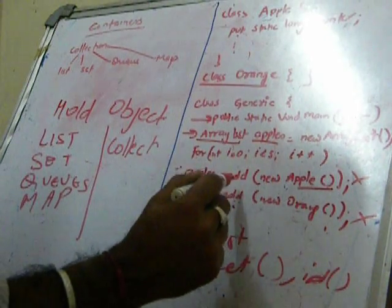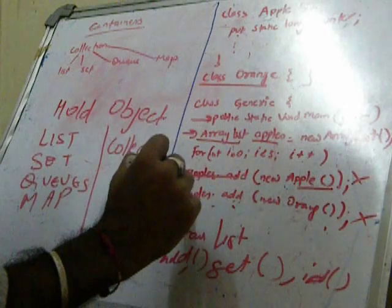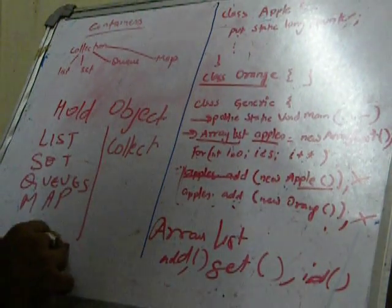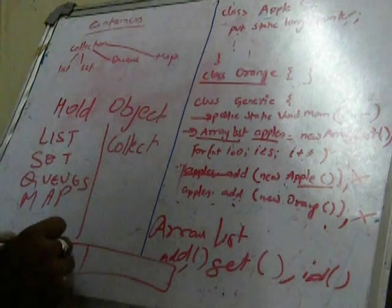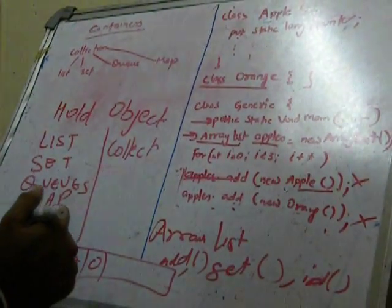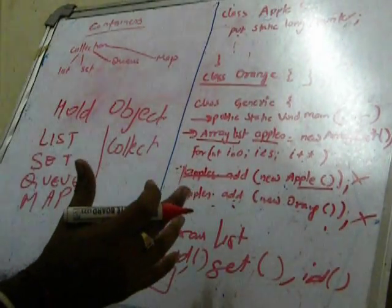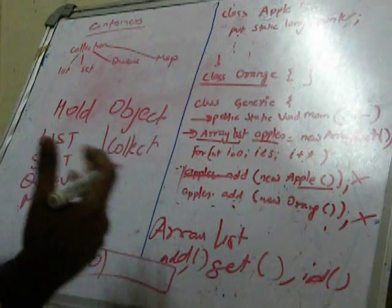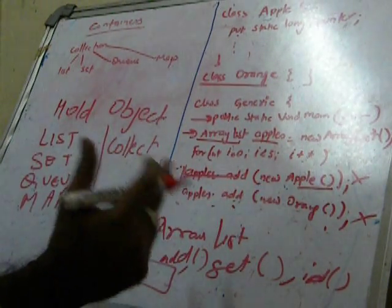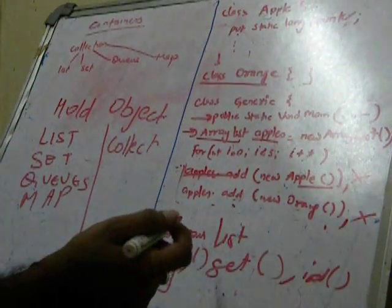We are able to add the object of Apple and object of Orange in the ArrayList. So this is fine, there's no problem and in compile time it would not give me any problems. It will clear the compilation without any issue.